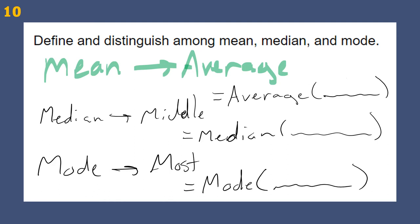If there's a couple of numbers that tie for the most occurrences, we write both as our mode. There's probably a couple versions of mode in Excel — that's meant to represent whether or not it counts ties and how it deals with ties. Our default is just =MODE.